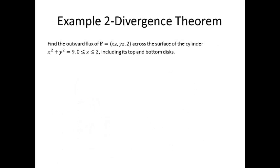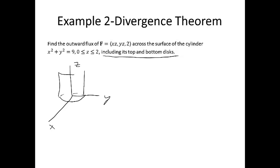Example 2 asks us to find the outward flux of a vector field F across the surface of the cylinder x squared plus y squared equals 9, for z between 0 and 2, including its top and bottom disk. Your surface S is comprised of three pieces: the circular cylinder S1 with equation x squared plus y squared equals 9, surface S2 which is the bottom cap on the plane z equals 0, and surface S3 which is the top cap on the plane z equals 2. Therefore, S is a closed surface enclosing a region E, and we can use the divergence theorem.